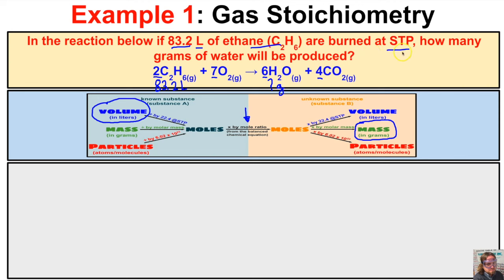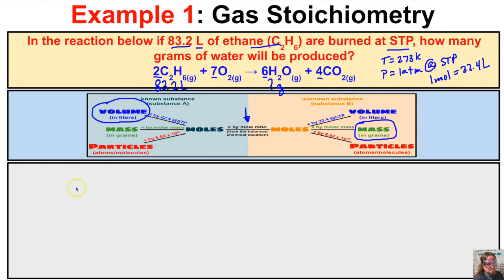An important part of this problem is that this is happening at STP. Whenever we see STP, this is telling us that the temperature is 273 K and the pressure is 1 atmosphere — standard temperature and pressure. We know that at STP, one mole of a gas is going to equal 22.4 liters. So we're starting off with 83.2 liters of ethane, which is C₂H₆.